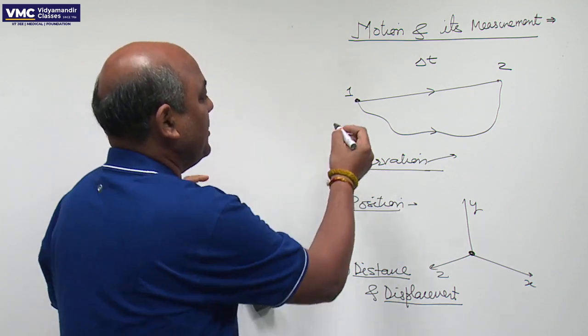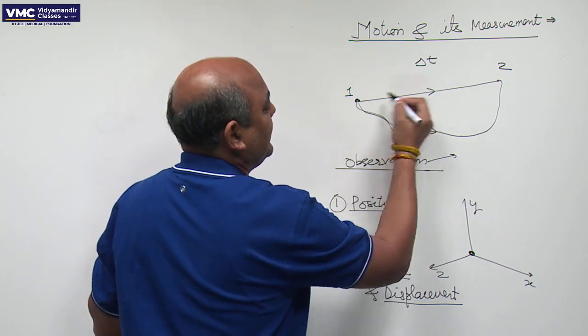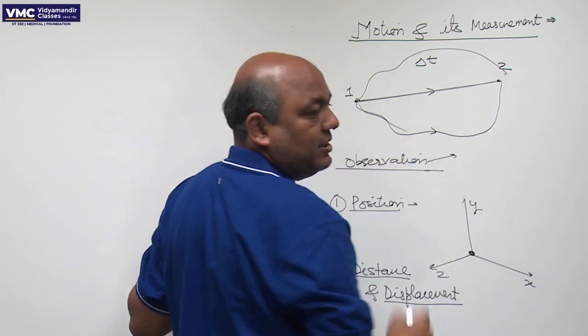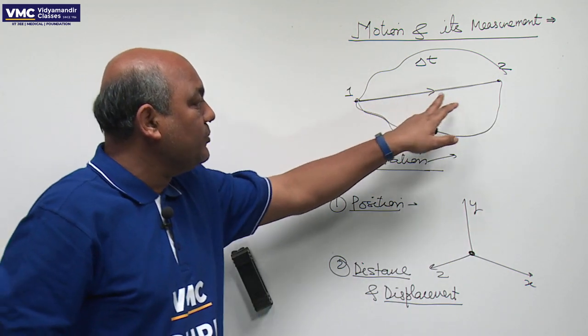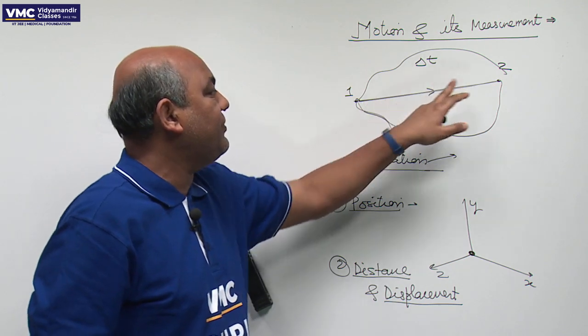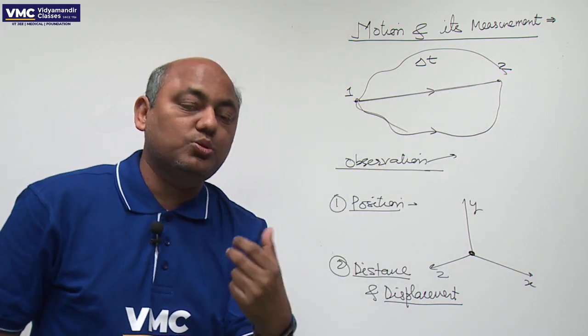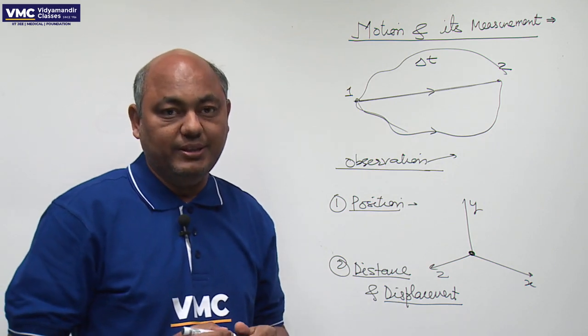The shortest distance along with the direction is called displacement. So if I talk about it, if I have done this or this or this, then we will add the shortest distance. We will add two points. So the distance between the initial and the final point, if we code the shortest distance, if we code the direction, then we say displacement.